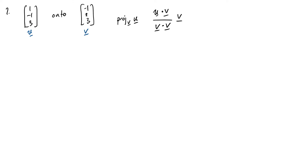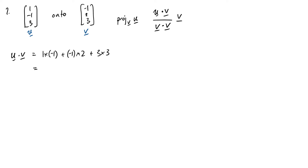So let's calculate those dot products. u dot v is going to be 1 times −1, plus −1 times 2, plus 3 times 3. Once you get used to doing these, you won't need to write down this line of working anymore — you can just do it in your head. It's going to be −1 minus 2, which is −3, plus 9, giving me 6 overall.